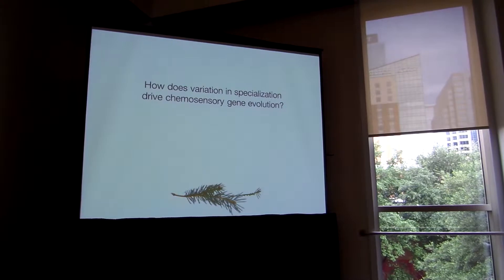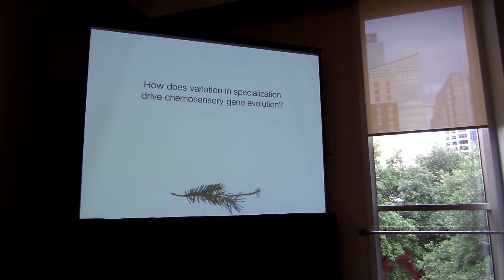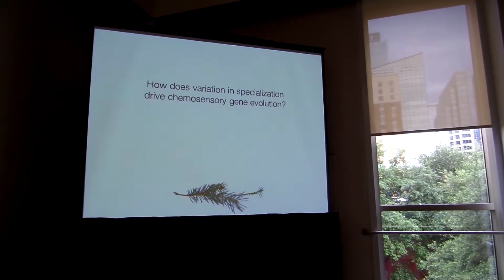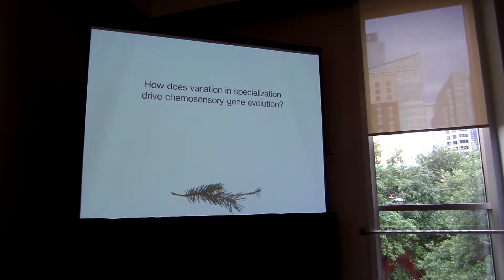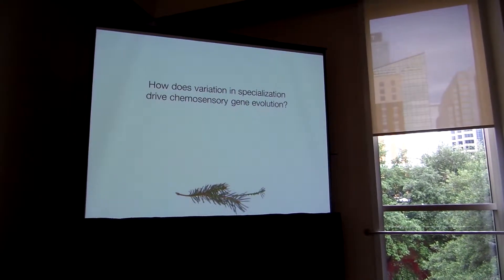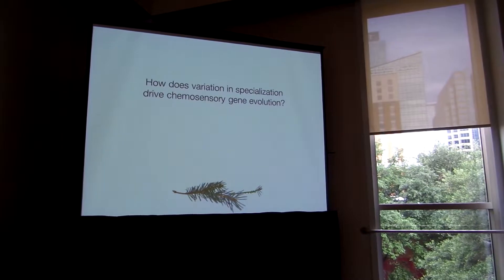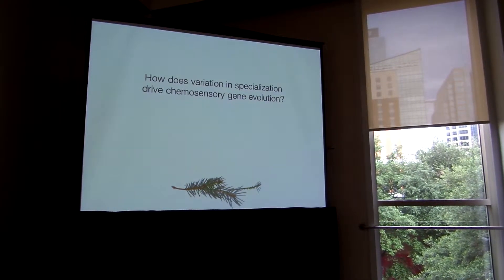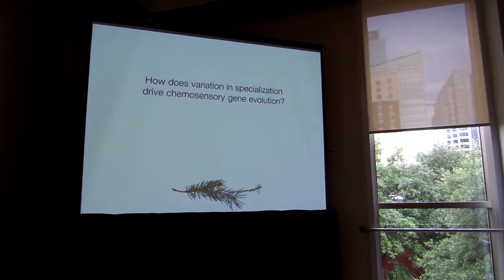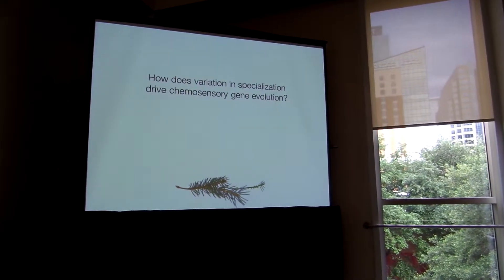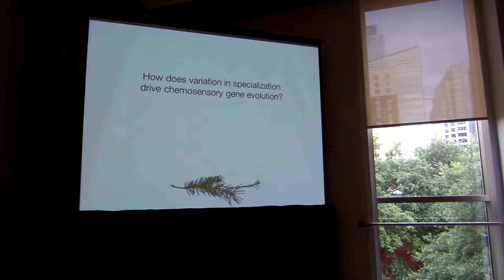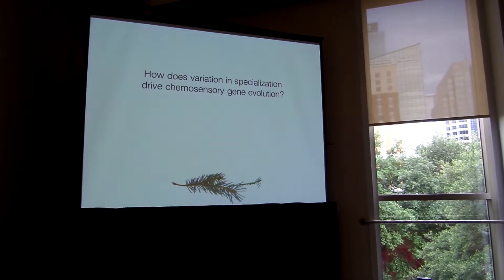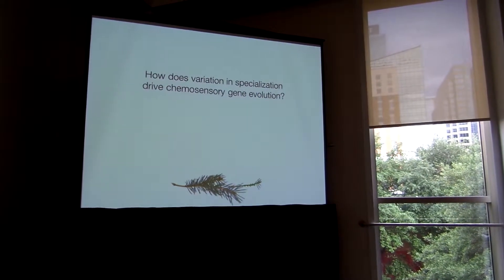The overall theme of my dissertation is to understand how variation in a niche influences insect chemoreceptor gene families. I'm interested in the genetic mechanisms underlying adaptation to heterogeneous, homogenous, and novel host environments. And I think this will help get at the extent of biodiversity we see in plant-feeding insects and why we see so much phenotypic variation.